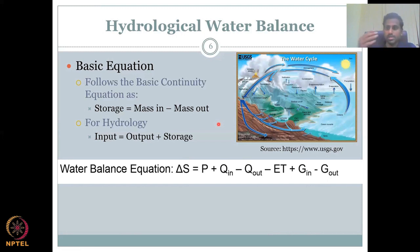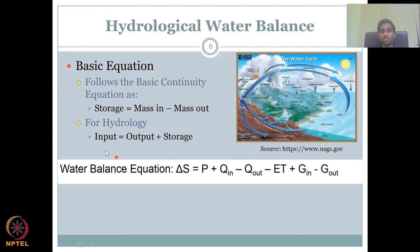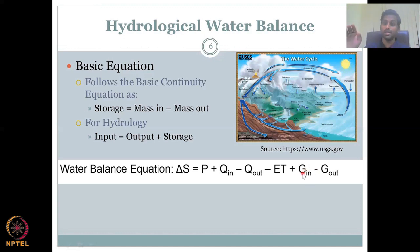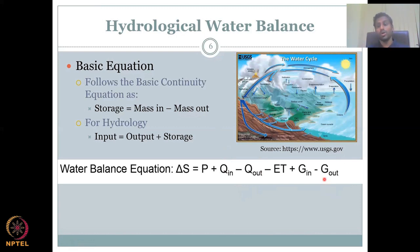For hydrology, the equation is: input equals output plus storage, rearranged so that precipitation equals losses plus storage. The full water balance equation is: ΔS = P + Q_in − Q_out − ET + G_in − G_out, where ΔS is change in storage, P is precipitation, Q_in and Q_out are surface water inflows and outflows, ET is evapotranspiration, and G_in and G_out are groundwater inflows and outflows. All components coming into the system are positive; all leaving are negative.